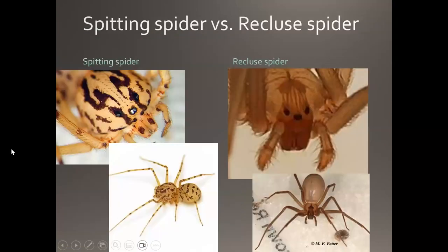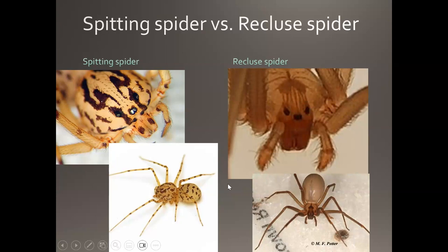Spitting spiders can be problematic to distinguish from recluse spiders because both have six eyes arranged in pairs on the leading edge of the cephalothorax. The key difference: spitting spiders are mottled in color, while recluse spiders are a more uniform brown. If a spider has six eyes and is mottled, it's most likely a spitting spider; if it's uniform brown, it's likely a recluse.